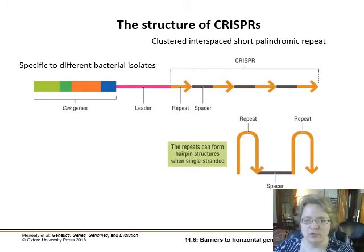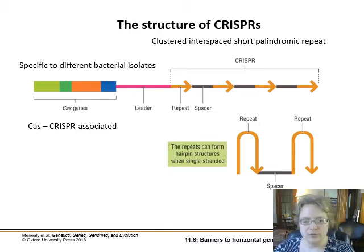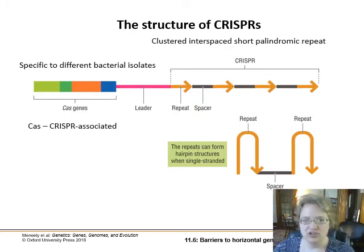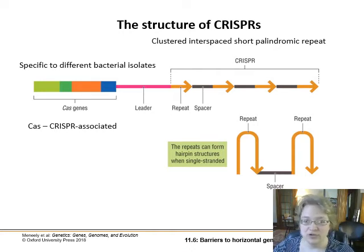Right next to the CRISPR area we have Cas genes — Cas stands for CRISPR-associated. So when you say CRISPR-Cas9, that means it's the CRISPR section plus CRISPR-associated gene 9. We see these little hairpin structures forming again, with the self-recognizing sequences on the ends.